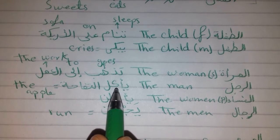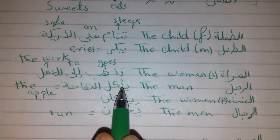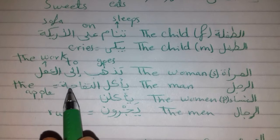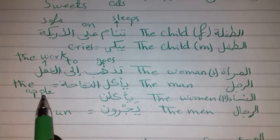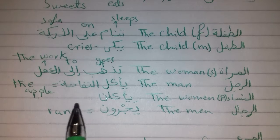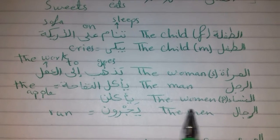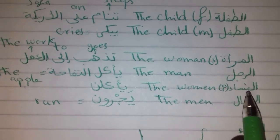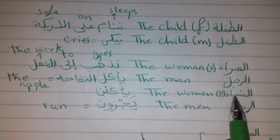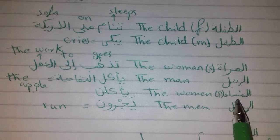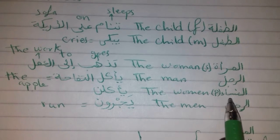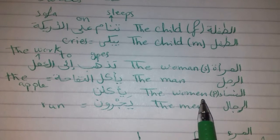الرجل يأكل التفاحة — يأكل means 'eats,' التفاحة means 'the apple.' So: الرجل يأكل التفاحة. Then النساء — this is a plural form. There is no singular form from النساء. It means 'the women.'